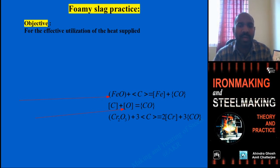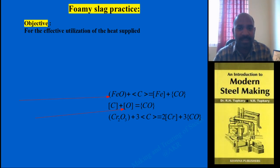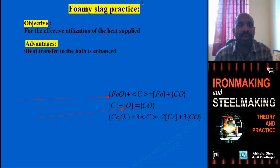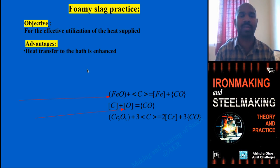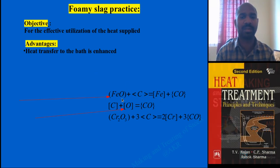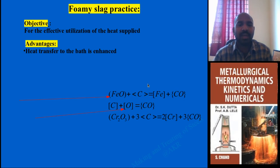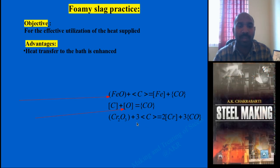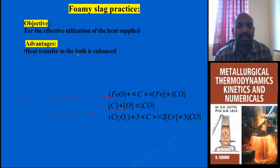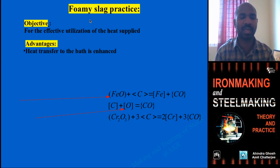The foamy slag practice: the main objective is effective utilization of heat. Heat transfer to the bath is enhanced. Foamy slag is formed when FeO in the slag reacts with carbon in the molten metal to form iron and CO gas. These CO bubbles form within the slag; similarly, C + O reactions in the molten metal generate CO bubbles. In stainless steel making, chromium reactions also generate CO bubbles. These bubbles are embedded in the slag and pushed to the top, forming foamy slag — a combination of liquid and gas.